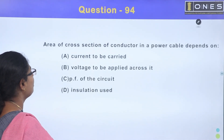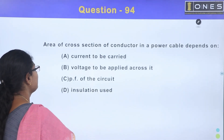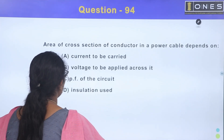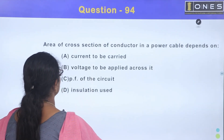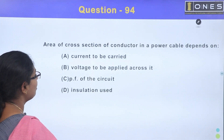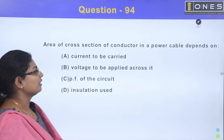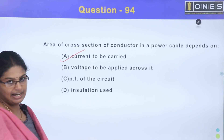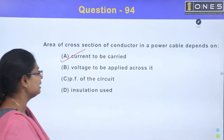Area of cross section of a conductor in a power cable depends on: Option A, current to be carried; Option B, voltage to be applied; Option C, power factor of the circuit; Option D, insulation used. The area of cross section of a conductor in a power cable depends on the current to be carried. The answer is Option A.